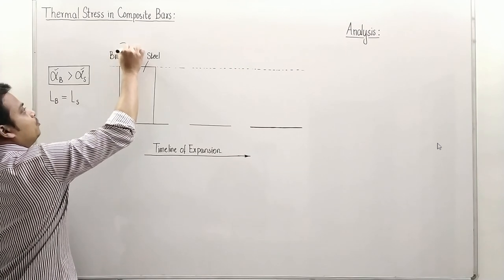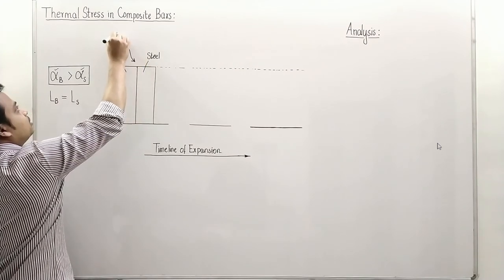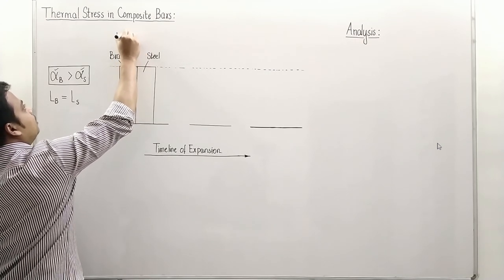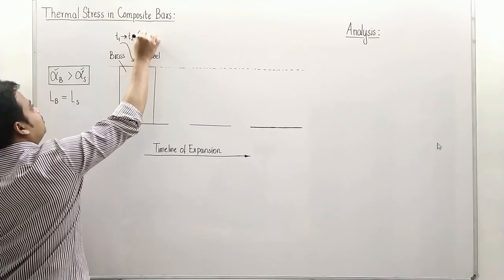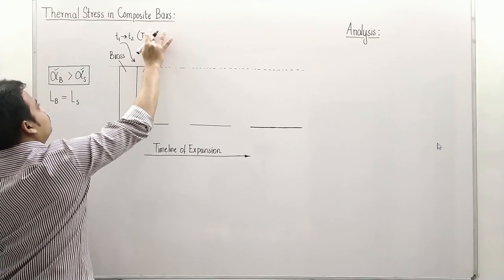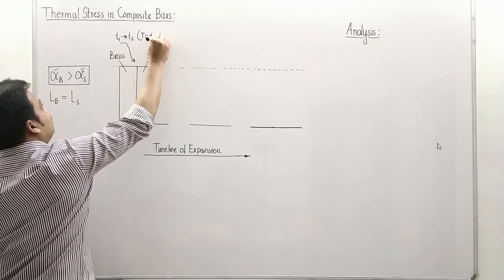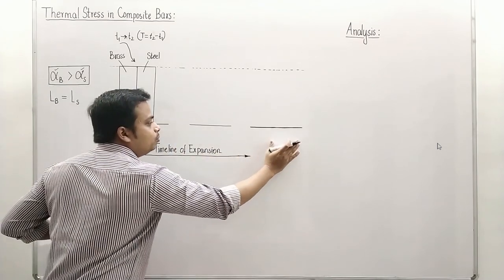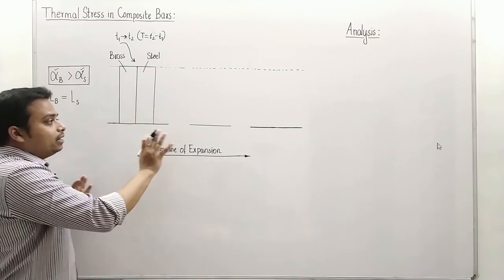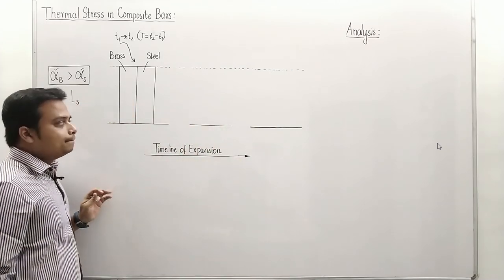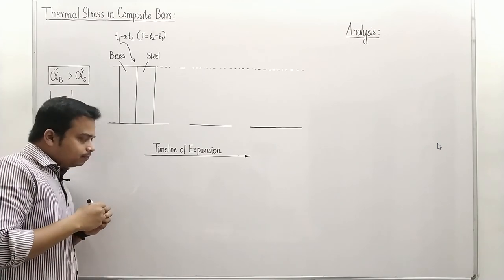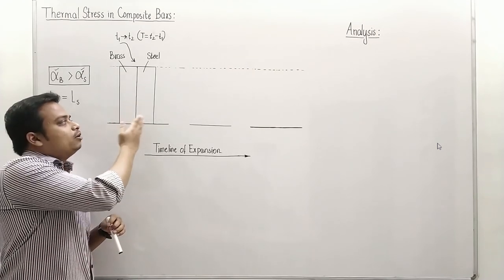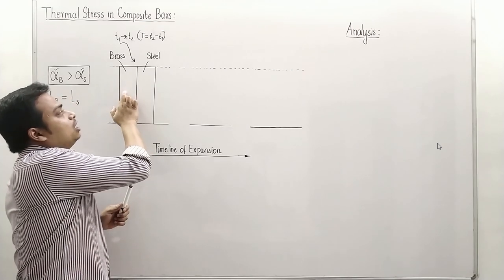What we are going to do is increase the temperature from T1 to T2, so there is a rise in temperature T equal to T2 minus T1. Take a look at this diagram — this is the initial state and this will be the final state. If we allow these two materials to expand freely — say they are not rigidly connected to each other — brass would have expanded more than steel.